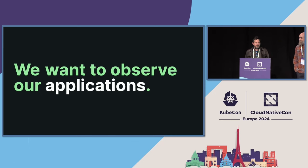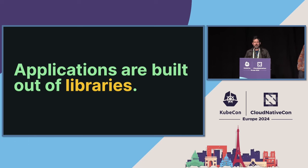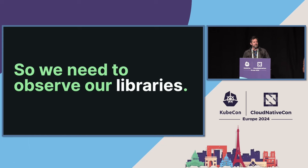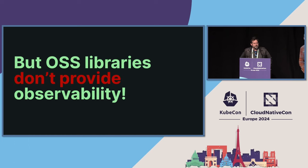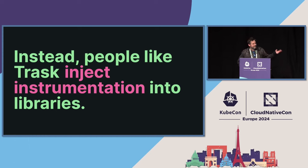So what is the whole goal? The goal is observing our applications. We run applications, we run services in production. However, these applications are built out of libraries — it's third-party open source software libraries that do most of the heavy lifting in our applications. So when we say we want to observe our applications, what we really mean is we want to observe our libraries. However, there's a problem, which is most libraries don't provide any observability directly. They don't have any instrumentation built into them. Instead, what happens is people like Trask write their own instrumentation and then inject that instrumentation into the library through something like a Java agent.